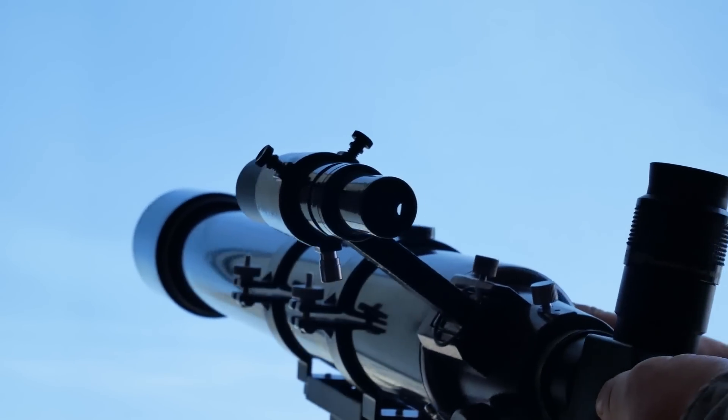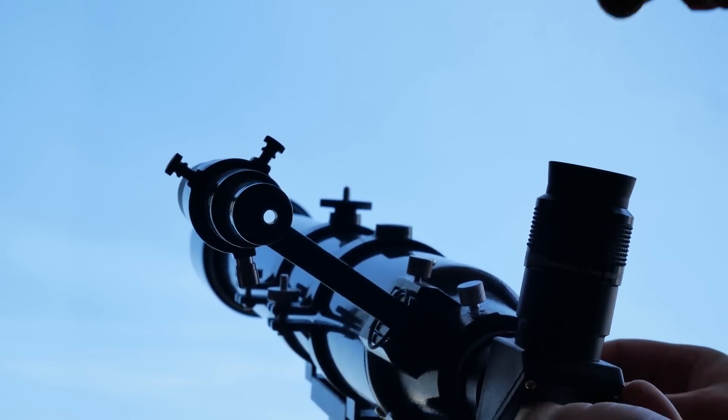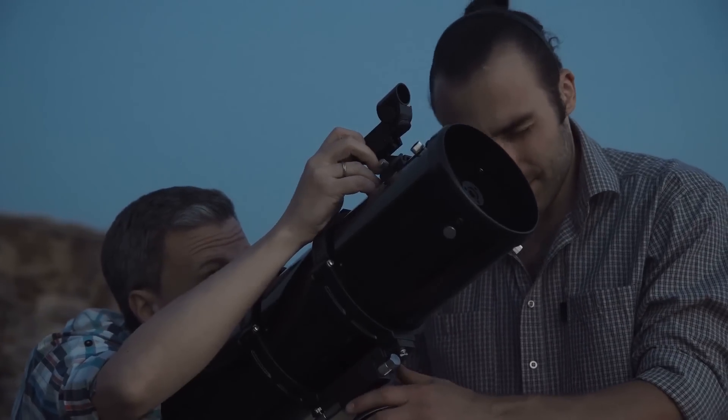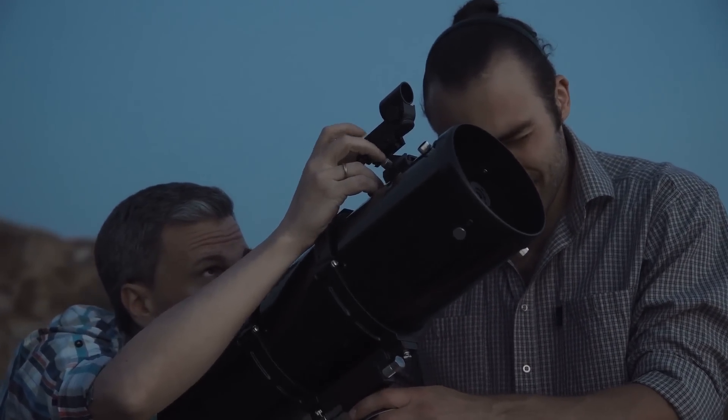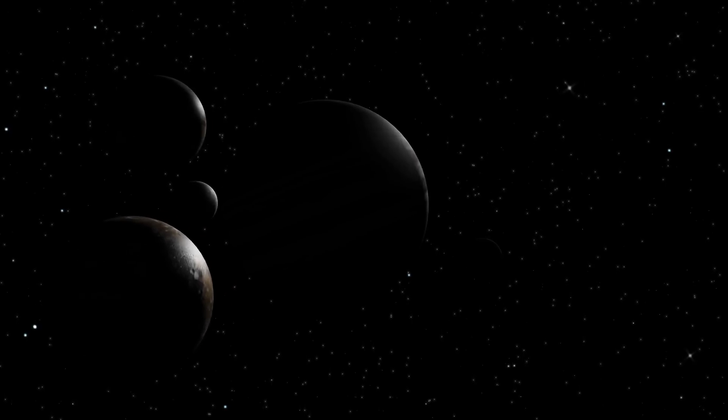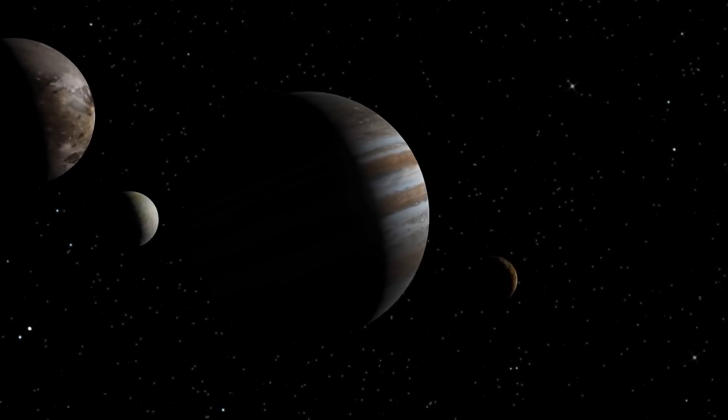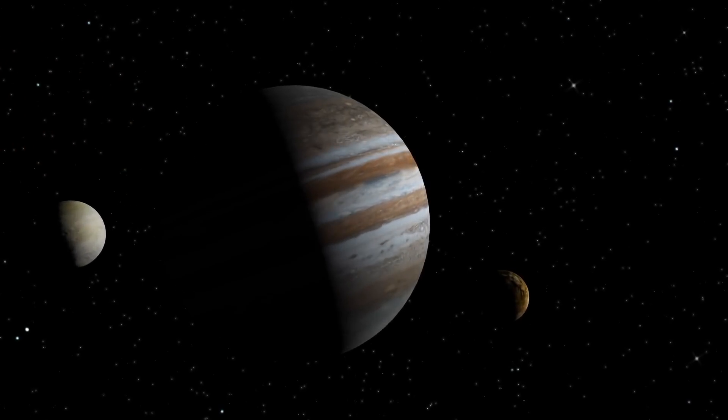Their observations and investigations were strengthened by the invention of the telescope in the early 17th century. Italian astronomer Galileo Galilei popularized the use of telescopes to study and discover celestial objects, including Jupiter's four biggest moons. In his honor, they are known as the Galilean moons.